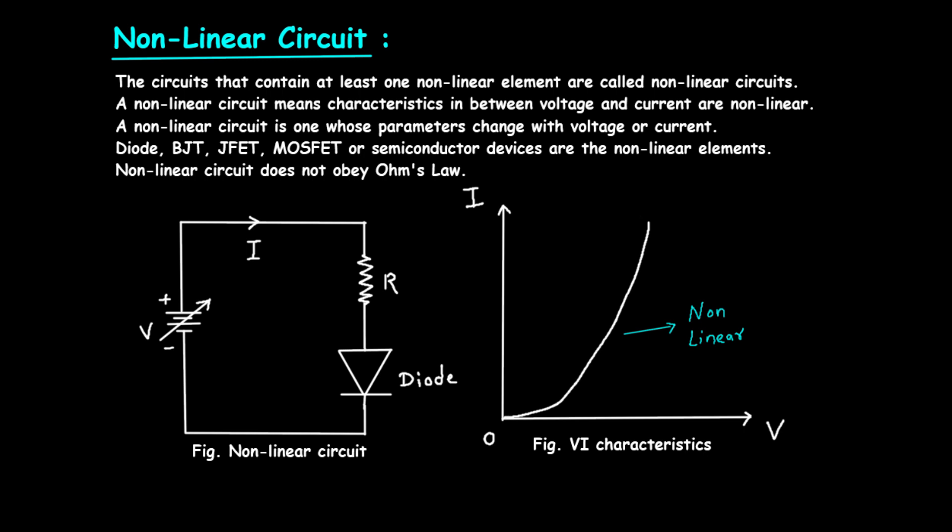Non-linear circuits and their components are widely used in various electronic applications. Here are a few examples. First, rectifiers. Diodes are used in rectifiers to convert alternating current, or AC, to direct current, or DC.